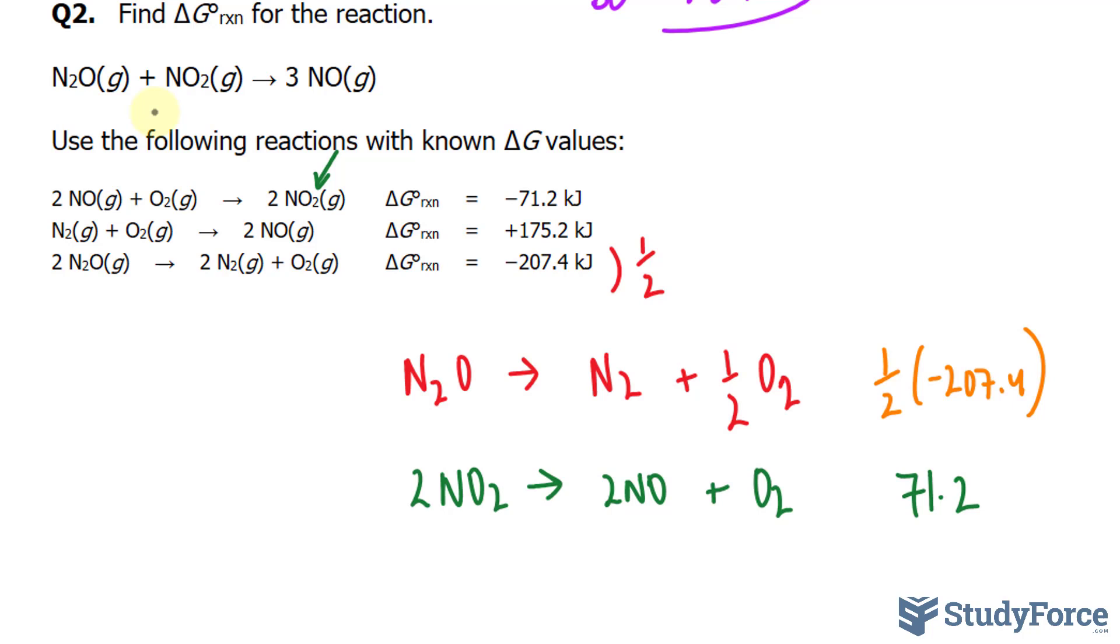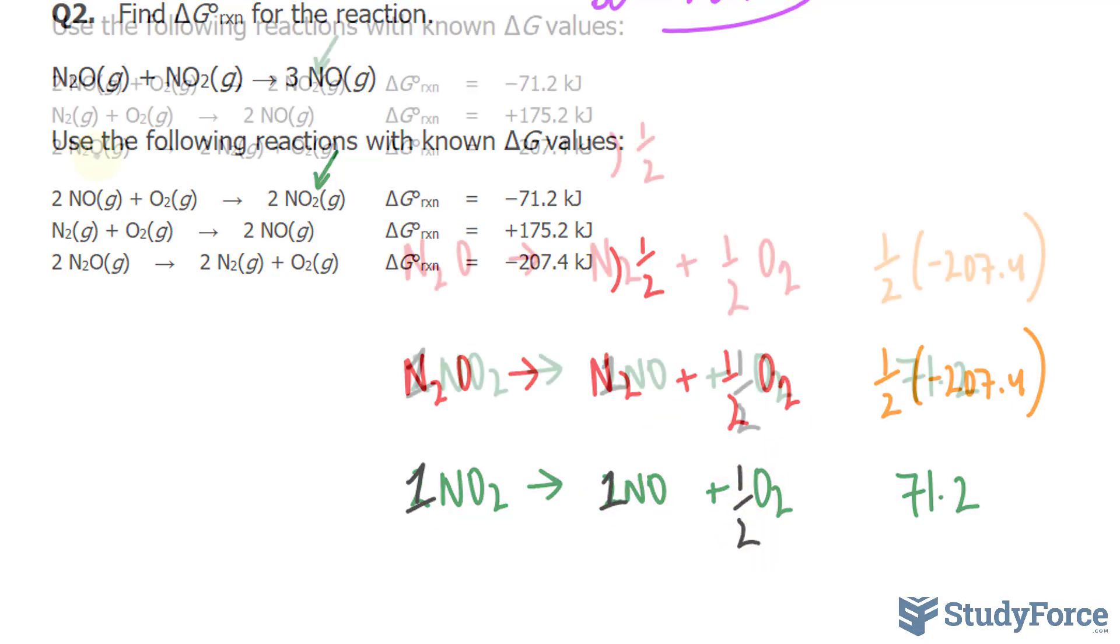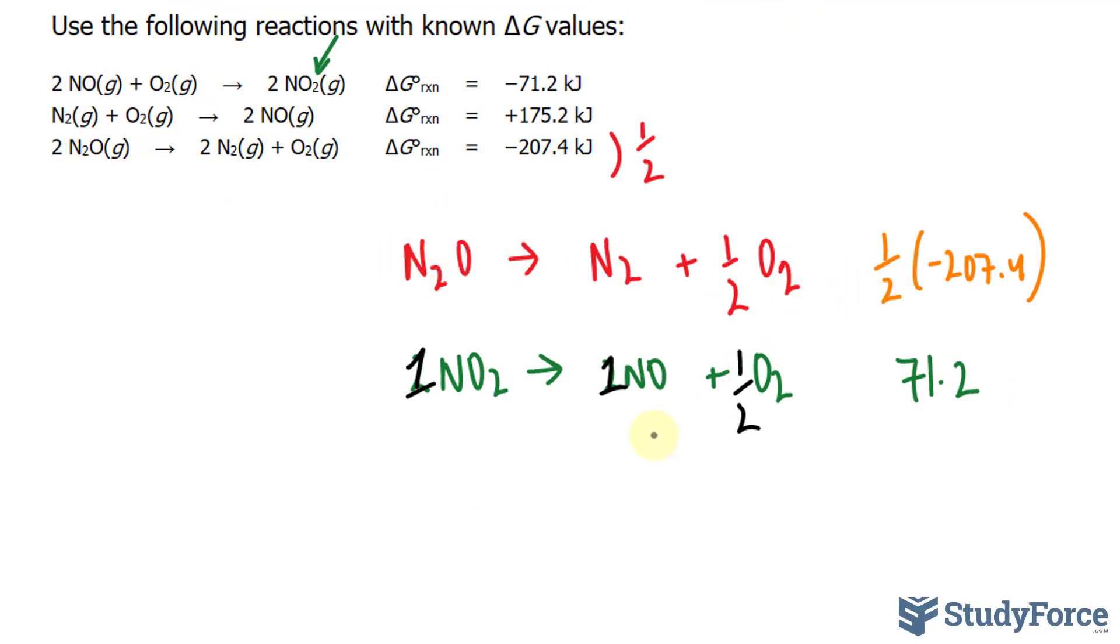So I'll have 2NO2 yielding 2NO plus O2 and that becomes positive 71.2. What's also interesting is that this has a coefficient of 1 and this has a coefficient of 2. So I'll divide each of these coefficients by 2, signifying a half. This becomes a 1, that becomes a 1, and that becomes half. So currently our equations are this one becoming what you see in red, this one becoming what you see in green, and this one has not been manipulated at all.